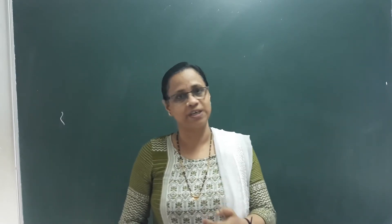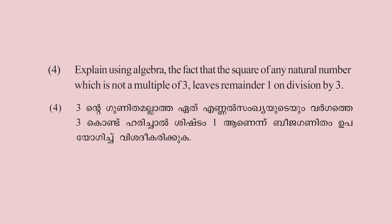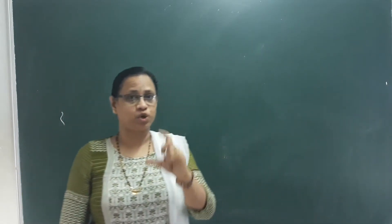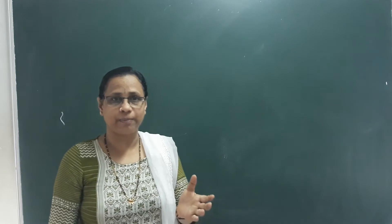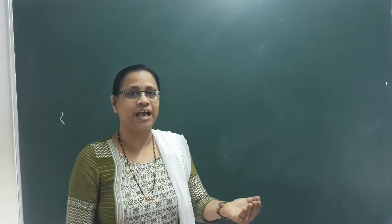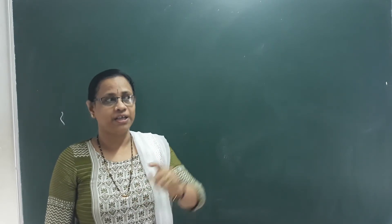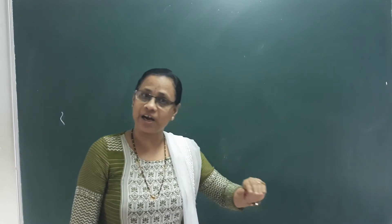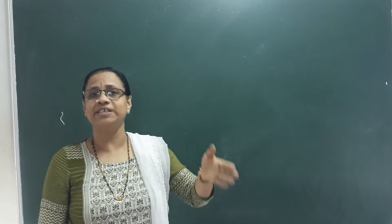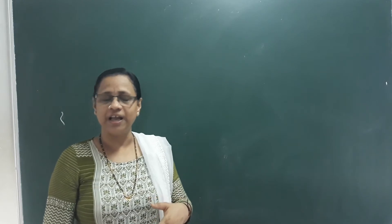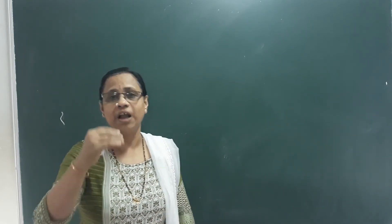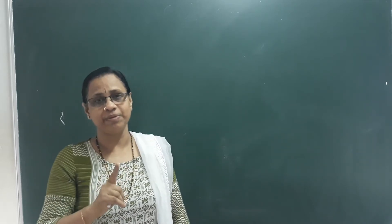This is the third question: Explain using algebra the fact that the square of any natural number which is not a multiple of 3 leaves remainder 1 on division by 3. If we pick any natural number, square it, and divide by 3, the remaining should be 1.